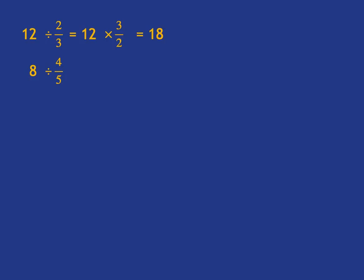Another example, 8 divided by 4 over 5. Again, you keep the first number the same, you change division to a multiplication, and you flip the fraction, and so you get your answer here of 10.